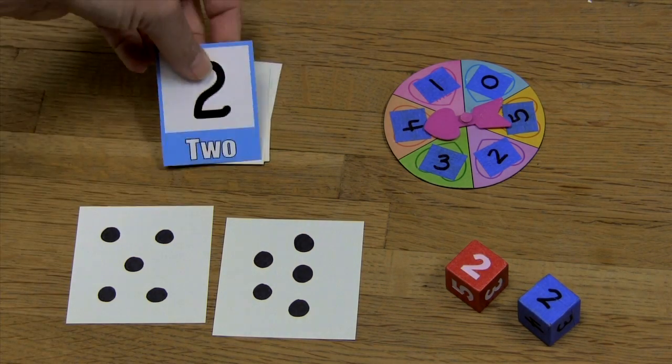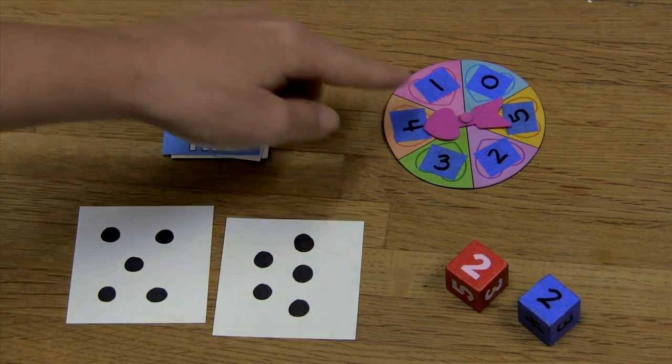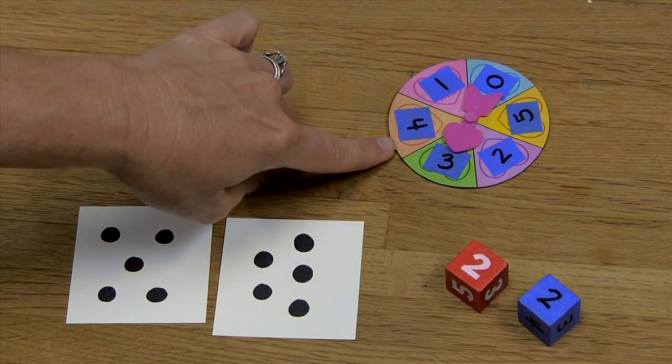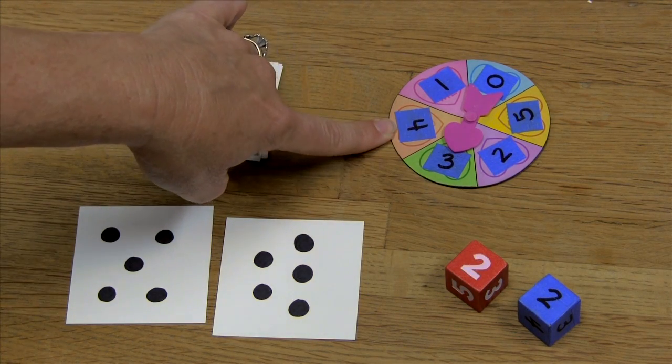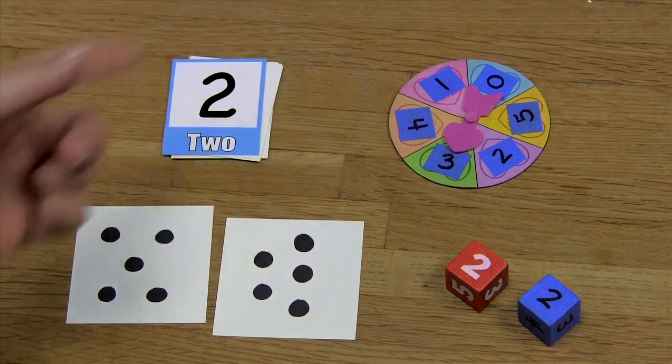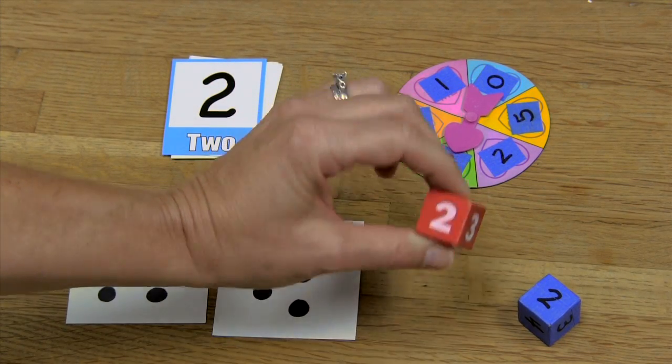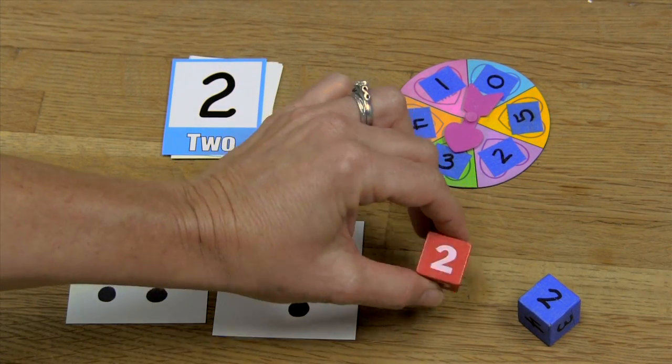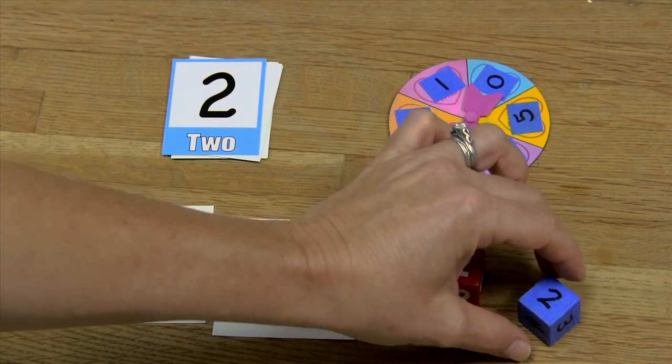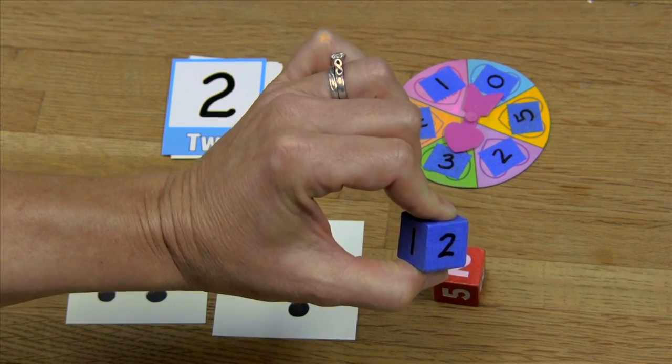They can also use cards that have just the numeral. You can use a spinner, or you can use a die that has numbers on it instead of dots. This die you can buy at Lakeshore, but if you don't want to spend that kind of money, just take a regular die, cover it with blue tape, and write your own numbers.